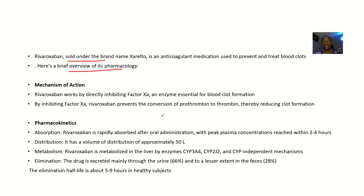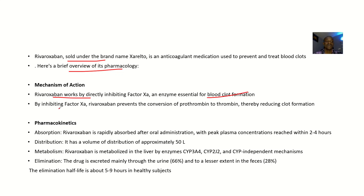For the mechanism of action, rivaroxaban works by directly inhibiting Factor Xa, which is an essential enzyme for blood clot formation. By inhibiting Factor Xa, rivaroxaban prevents the conversion of prothrombin to thrombin — that's where it exerts its action along the blood clotting pathway.